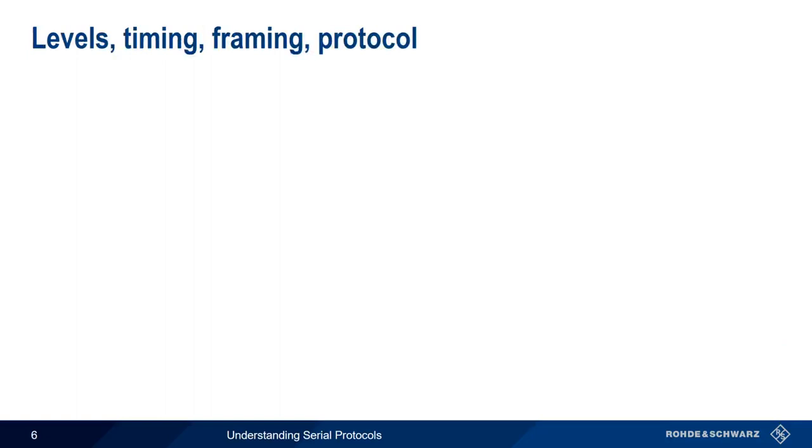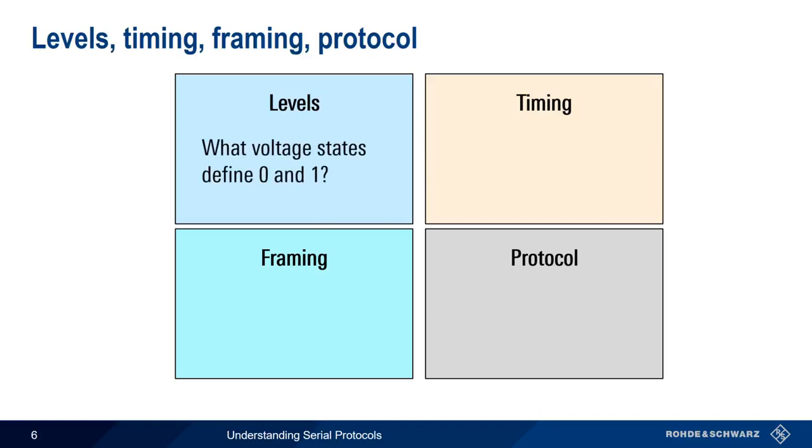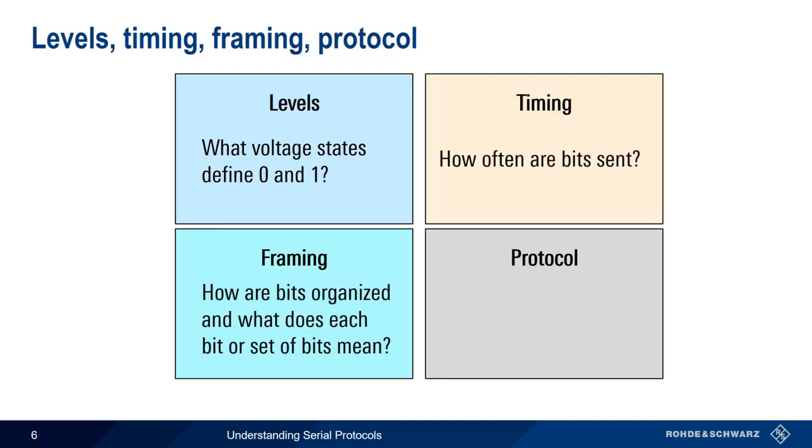Although implementation details differ between protocols, all serial protocols have four basic characteristics: levels, timing, framing, and something we're going to refer to as protocol. Levels answers the basic question of how voltages are used to represent ones and zeros. Timing tells us how often bits are sent, or the bit time. Framing is how bits are organized into groups and the role of each bit or group of bits. And protocol explains which messages are exchanged under which circumstances. All of these are important for the analysis and decode of serial data.